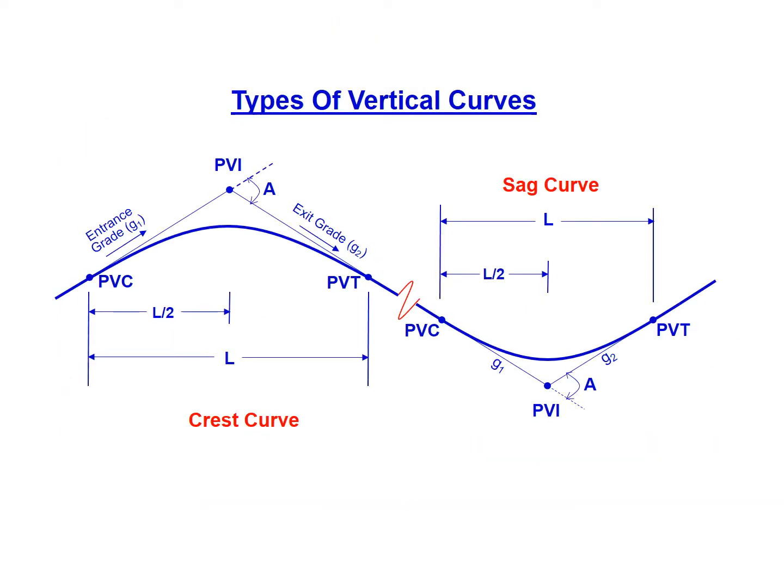There are two primary types of vertical curves: a crest curve where we have that concave down shape and a sag curve with the concave up shape.